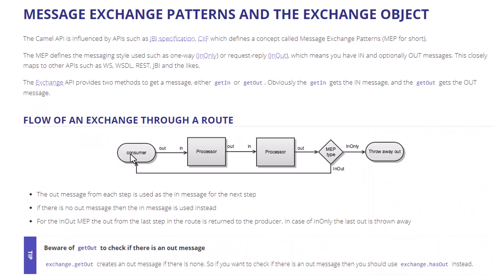The application makes a call to the iFlow, and whatever the sender sends — the header and the body — is part of the message. The processors can modify the message any way they want as it goes through all the processors in the workflow. At the end it checks whether the message exchange pattern is in-only or in-out. If it is in-out, the message is sent back to the sender; if it is in-only, then it is thrown away.